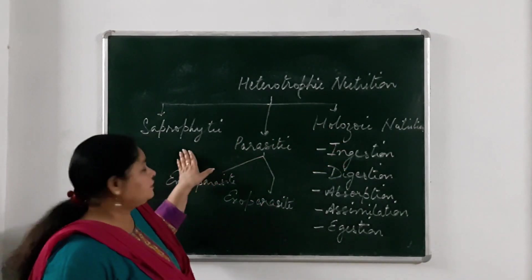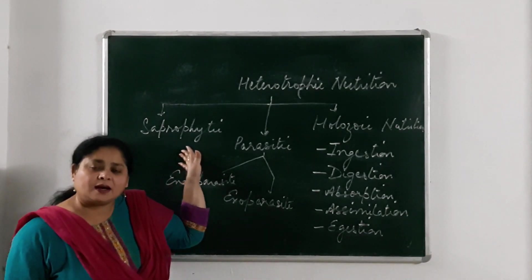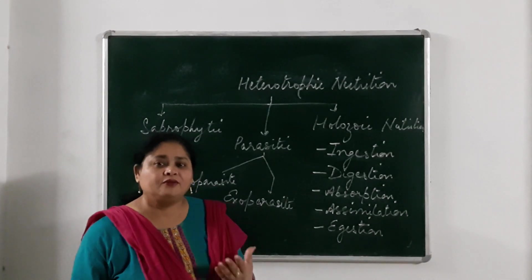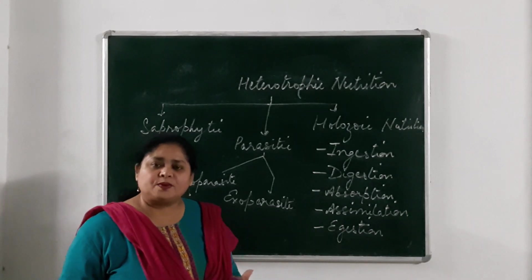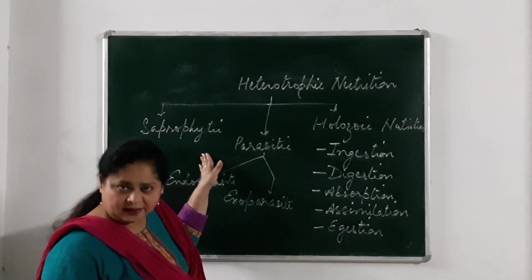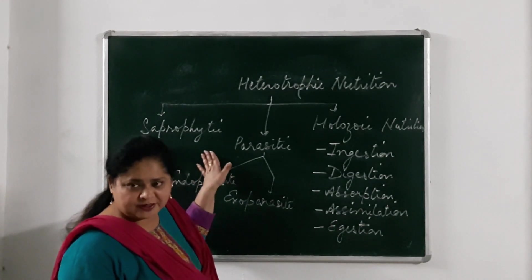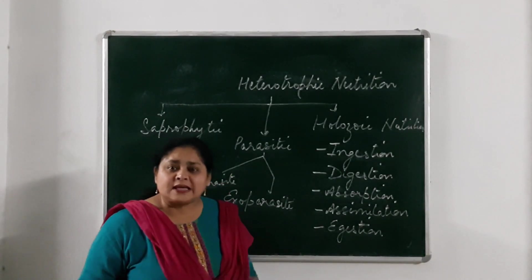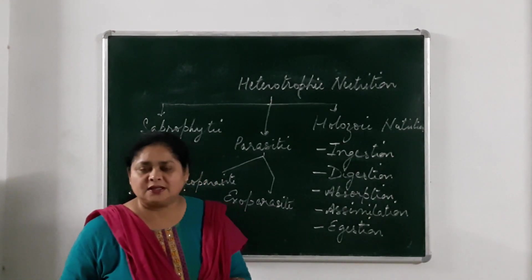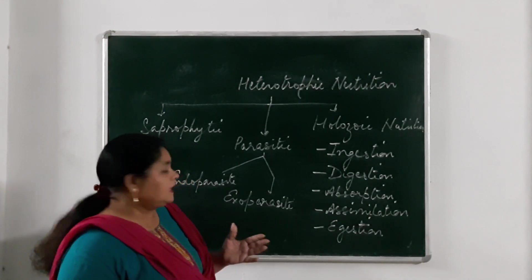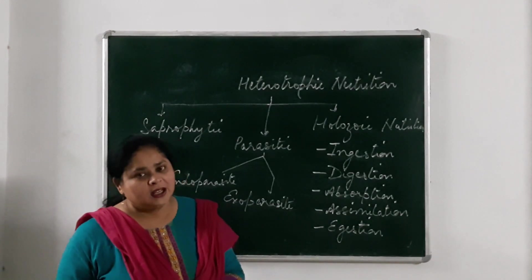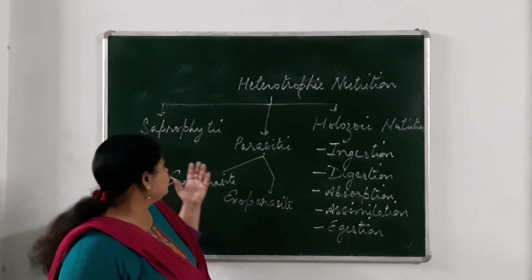The first category is saprophytic nutrition. Saprophytes are living organisms which depend on organic decaying matter for food. This organic matter is in complex form. Saprophytes — which are actually bacteria and fungi — release enzymes from their body. These enzymes convert the complex organic material into simpler organic material, which they then absorb and utilize for their life processes.